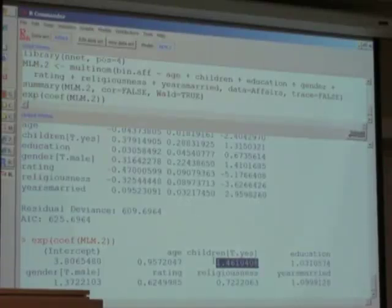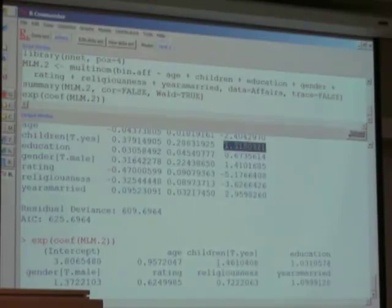But in the binary logit model, you get the answer. The odds of having an affair increases by 46 percent. However, notice that the coefficient here is not statistically significant.